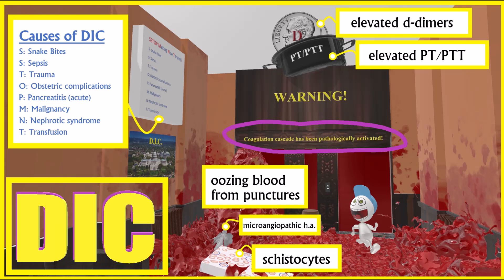That's represented by the blood all over the room flowing out of the wall — it's supposed to remind us of the oozing blood seen in D.I.C. On top, there's a random pot; the pot that's high up reminds us of the elevated PT and PTT. Inside the pot are dimes with D on them — D for D-dimers — representing the increased fibrin degradation products, the D-dimers.